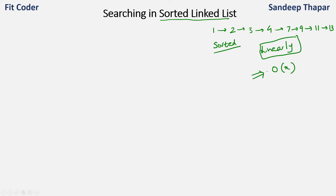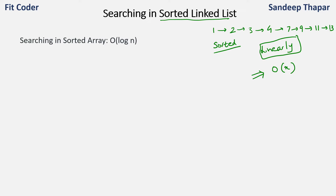To search any element in the linked list we need to start from the head and then check one by one whether the element is present in the list or not. This searching in the linked list is very slow. But if we compare it with a sorted array, the search can be improved to O(log n) by binary search, where we take the midpoint and discard either the left part or the right part.